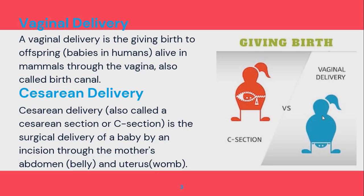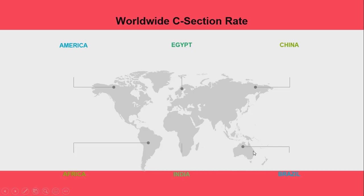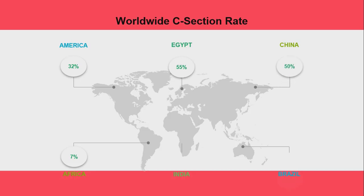C-section is life-saving in certain conditions, so it becomes necessary to operate through the surgical mode. The rate of caesarean section differs worldwide. In America it is 32%; in Africa it is 7%; in Egypt it is 55%; in China it is 50%; in Brazil 80% of births are through C-section, while in India the rate is 17%.